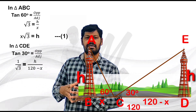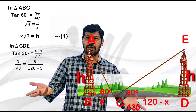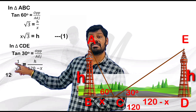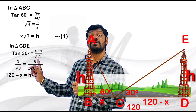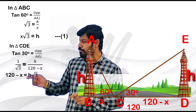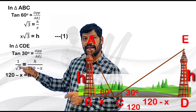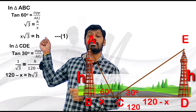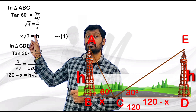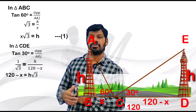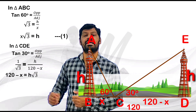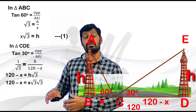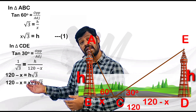Cross multiplication gives us: 120 minus x is equal to H into root 3.